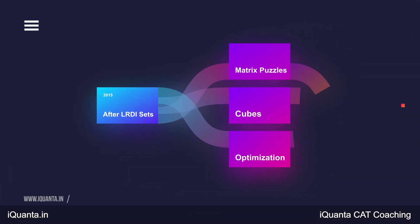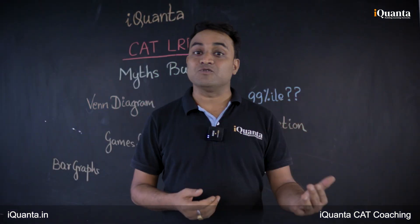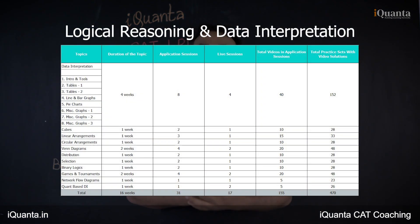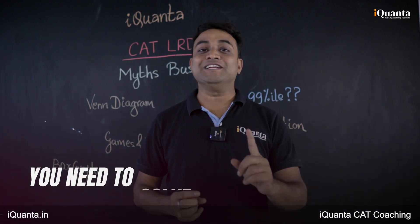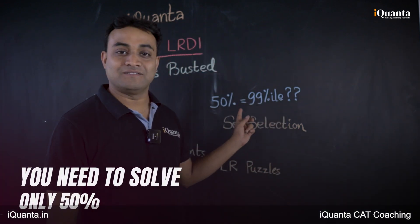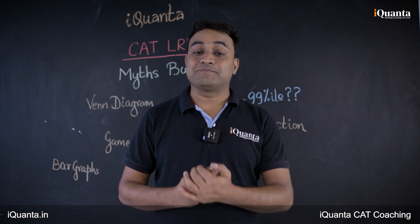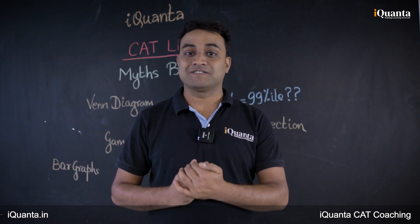Now they ask complex matrix puzzles, reasoning-based data interpretation, calculation-based reasoning, questions in sets of 3 and 4, Venn diagrams, and more. But the good thing about CAT LRDI is you only need to solve 50% of the questions to get 99 percentile, and that is achievable with the right practice of sets and topics.